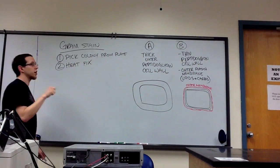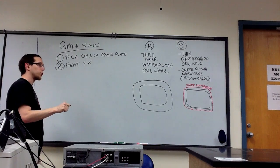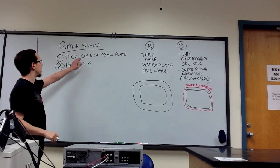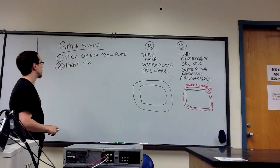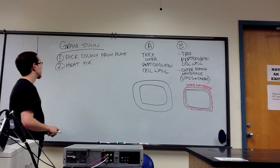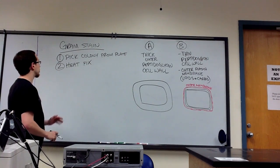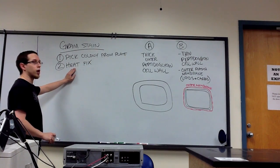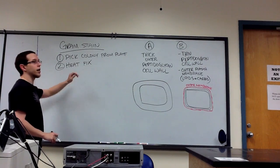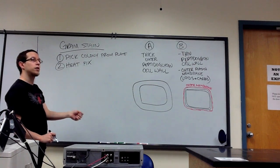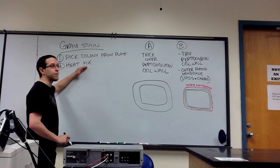So you sterilized your inoculating loop, you cooled it, you picked a colony from a plate or from the lawn. You then rub that into the droplet of water that was on your slide, and you let it air dry. And after you've let it air dry, you waved it over the incinerator. This heat fixed the bacteria.